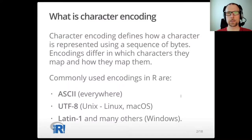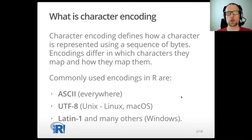Encoding defines how a character maps to a sequence of bytes. Different encodings support different sets of characters and they map them differently. Commonly used encodings with R are ASCII on all operating systems, UTF-8 on UNIX systems, and Latin1 and many others as well on Windows.